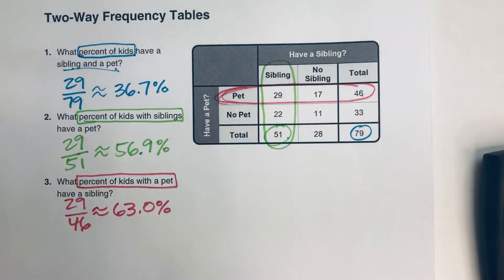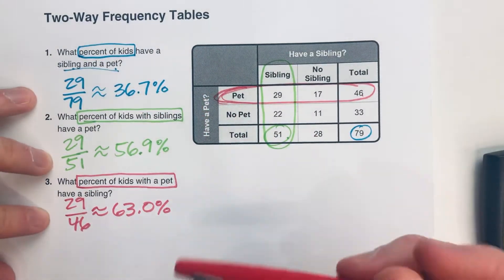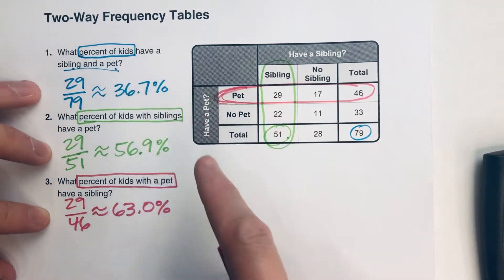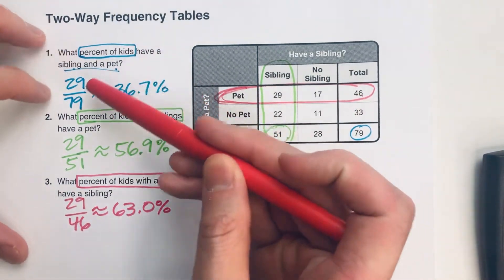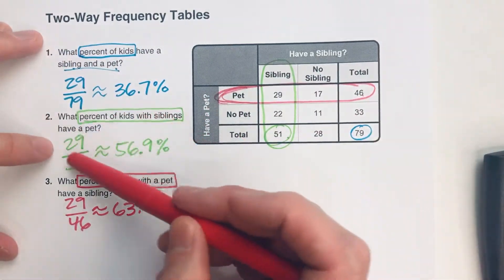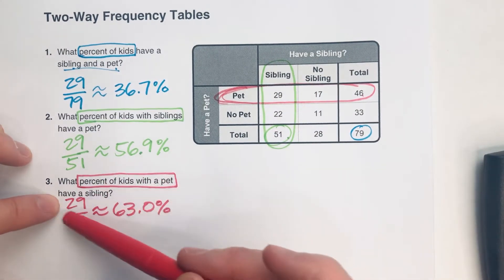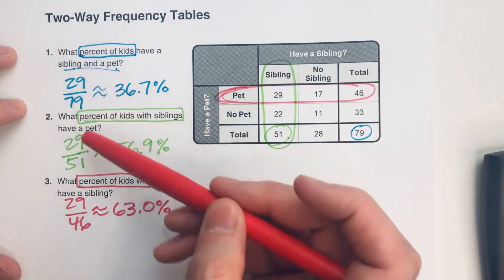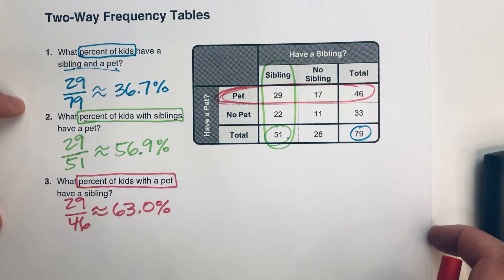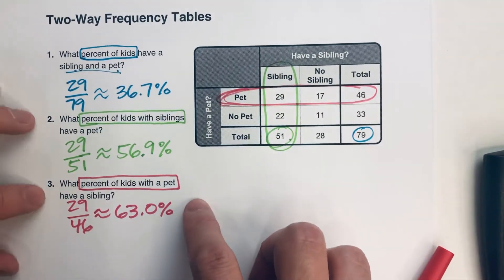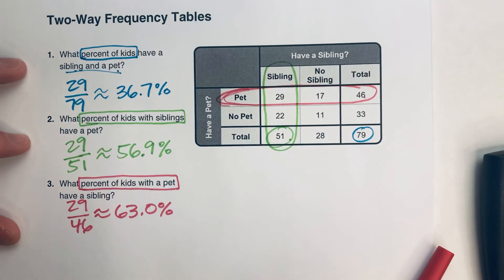Notice that when solving these, they're all similar, but it all comes down to: when trying to find a percent, what is the whole? Are we basing the percentage out of the total number of kids, the total number of kids with siblings, or the total number of kids with pets? Changing that number changes the whole percentage because we're basing it out of a different number of things. Hopefully that helped — good luck on your math and I'll see you next time.